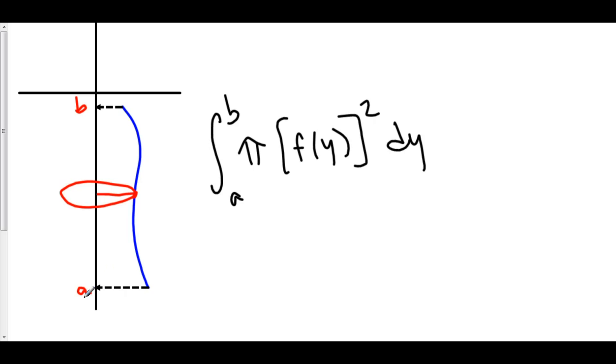So, the integral from y equals a to y equals b of pi r squared, where r is the distance from the y-axis to the function. And that, of course, is just in terms of y.